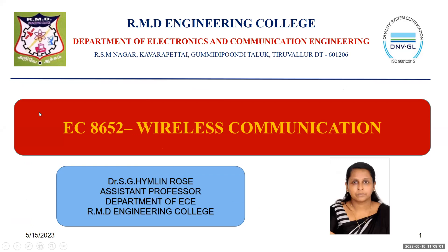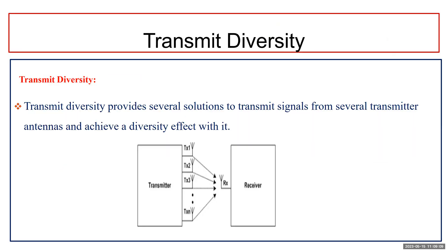Good morning. Today we will discuss transmit diversity in wireless communication. In many situations, multiple antennas can be installed at just one end, usually at the base station. For the uplink transmission from mobile station to base station, multiple antennas can access receive diversity branches. But for the downlink, any possible diversity originates at the transmitter.